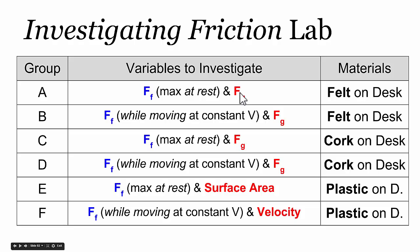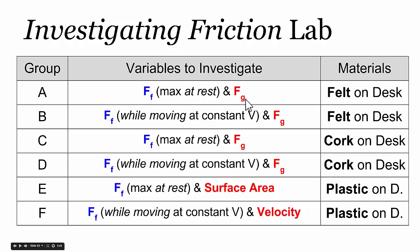In our pre-lab, we identified that it seemed to take more force to get something to move or to start to slide than it did to keep something sliding at a constant velocity. So we split up the two ideas of friction: how big is the largest value that friction can be between two surfaces when something's at rest or not sliding? Group A looked at the relationship between the force of gravity and the maximum frictional force that can exist between two surfaces at rest.